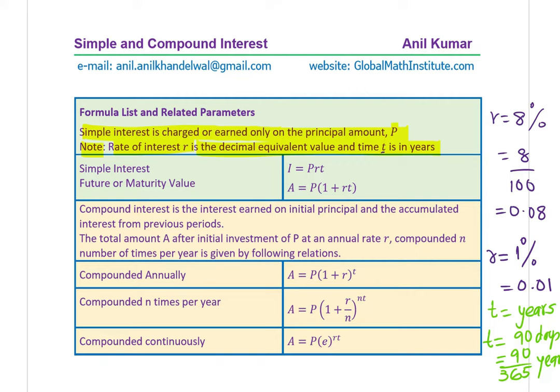Talking about compound interest: compound interest is the interest earned on the initial principal and the accumulated interest from previous periods. The total amount A after an initial investment of P at an annual rate R, compounded N number of times per year, is given by the relation A equals P times (1 plus R over N) to the power of N·T. Very important here is N, the number of times compounded per year.